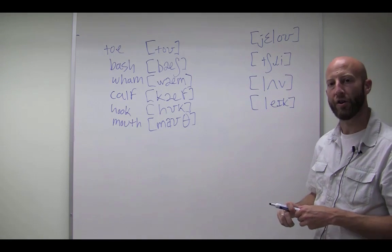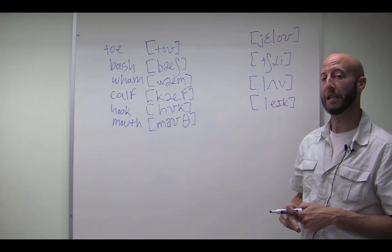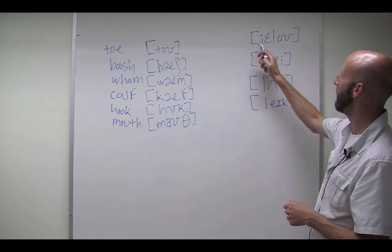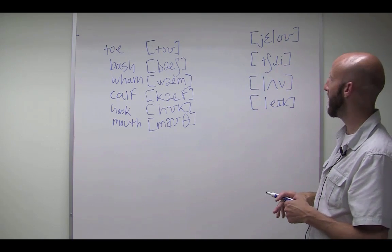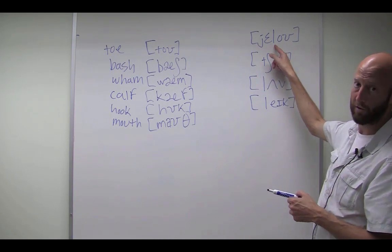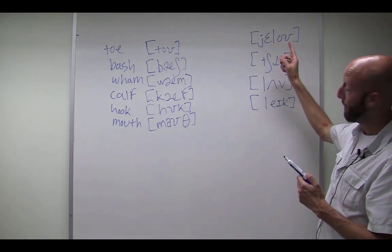So, we have a juh. No, we don't. Remember, that actually represents the yuh sound. So, we have yuh. This vowel is eh. So, we have yuh. Then, we have an ul. Yell. Yell. Any guesses? Yellow. Yellow.